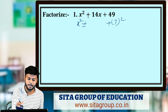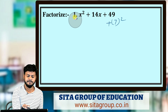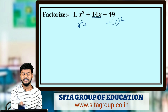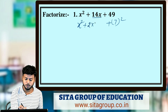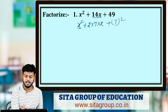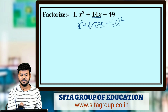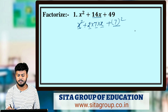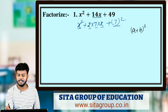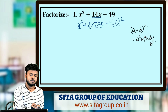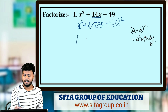Now, 14x can be written as 2 × 7 × x. So this matches the formula a² + 2ab + b², which is the identity (a + b)².